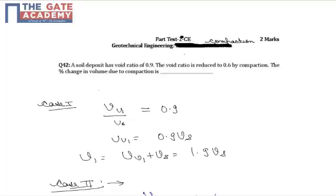Now we know that volume of voids to volume of solids is defined as void ratio. So here we have case 1 when it is 0.9, then volume of voids in case 1 comes out to be 0.9 into Vs. This case 1 corresponds when void ratio is 0.9.